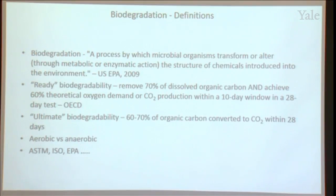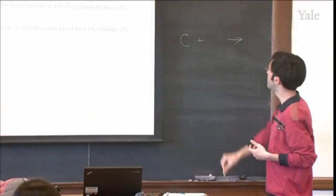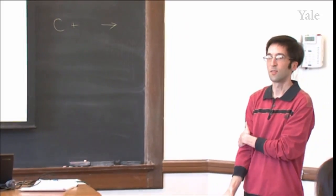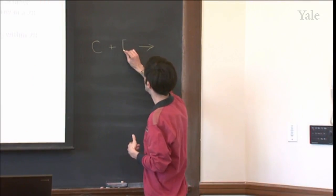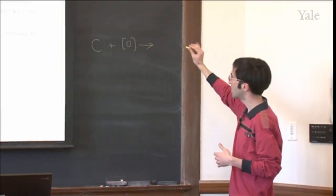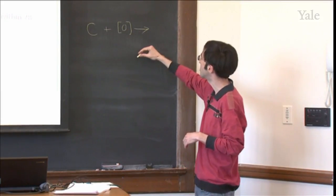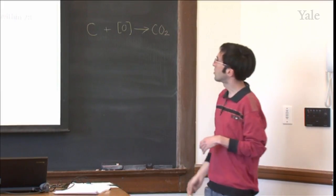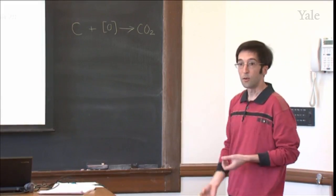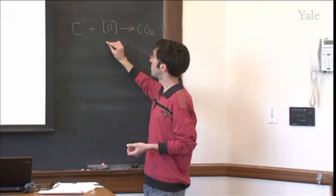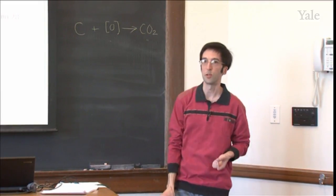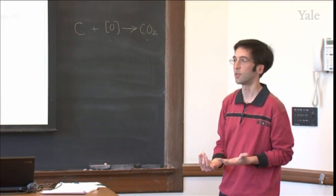Thinking about these requirements brings us back to stoichiometry: why do we measure oxygen demand and CO2 production? What's happening to the organic chemical? You have some generic carbon reacting with oxygen — it could be O2 gas — with biological organisms acting as catalysts inside the cell, inside the bacteria, and the product is CO2. You can calculate, based on how much carbon is in your compound, the theoretical amount of oxygen needed and the theoretical amount of CO2 produced.